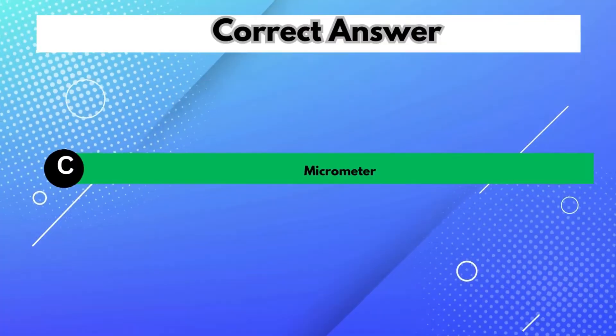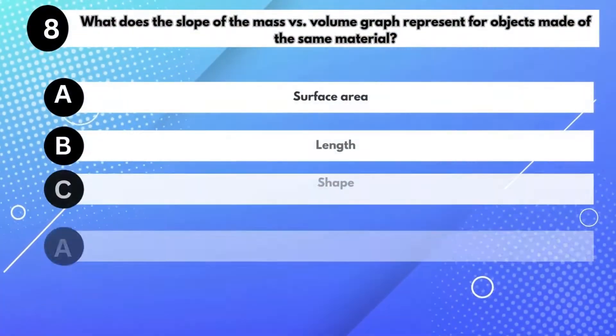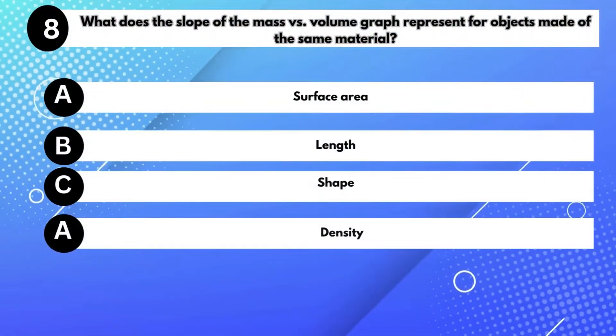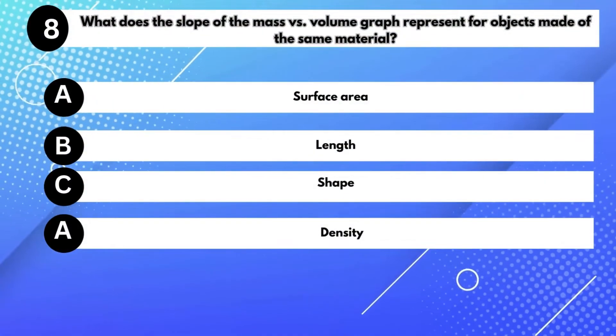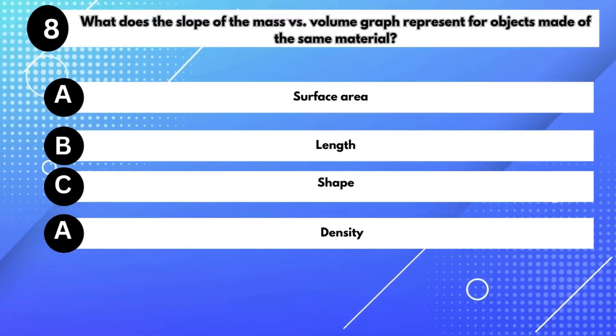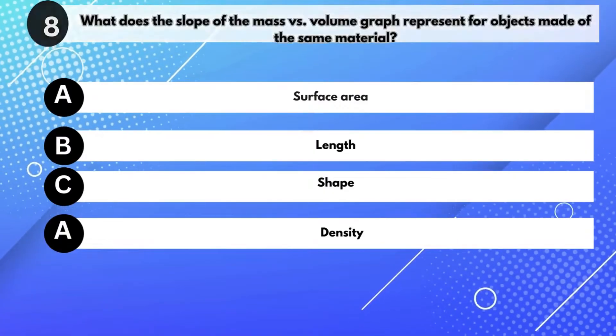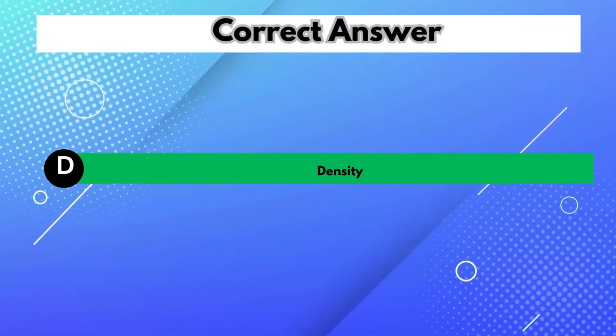Answer C: Micrometer. What does the slope of the mass versus volume graph represent for objects made of the same material? Answer D: Density.